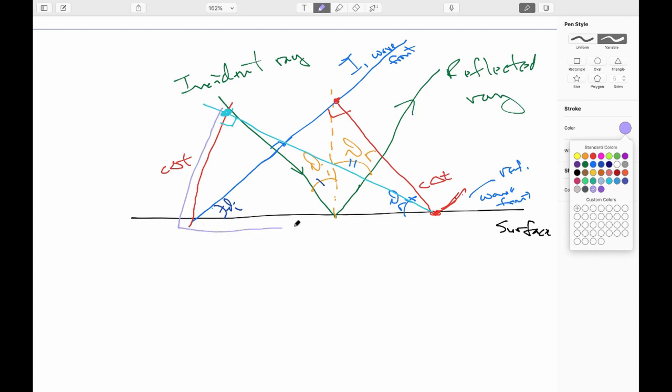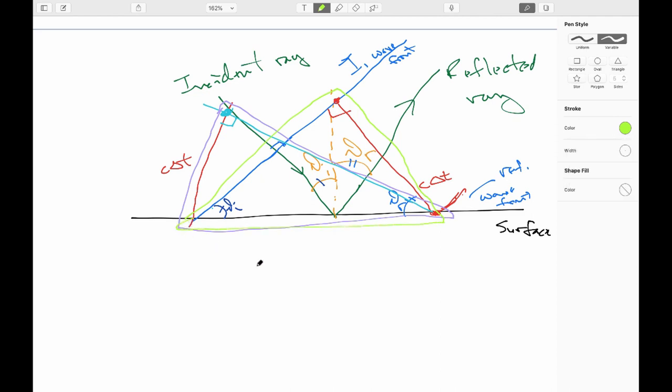Okay. Well, if we look here, there's two triangles I can take a look at here. Let's take a look at this lilac triangle right here. And then let's also go and take a look at this bright green triangle right there.